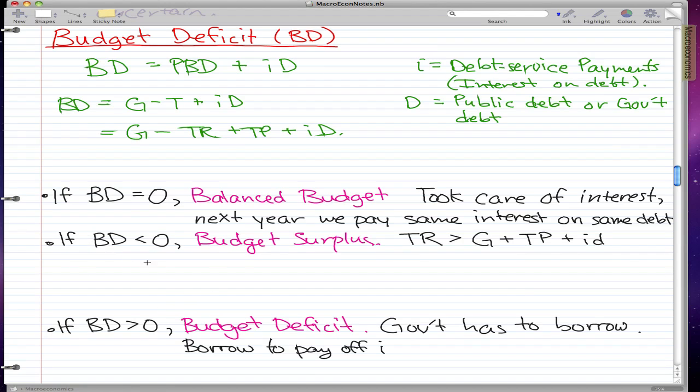When BD is less than zero, it's a budget surplus. At that time, tax revenue is greater than the combination of government spending, transfer payments, and interest on debt. Note: this should be a large D, not ID.